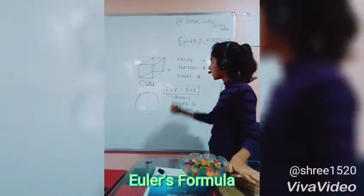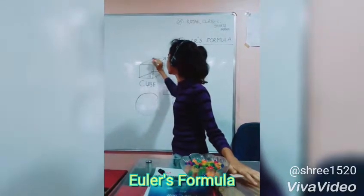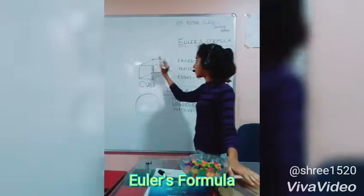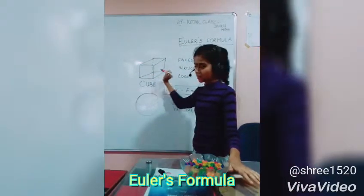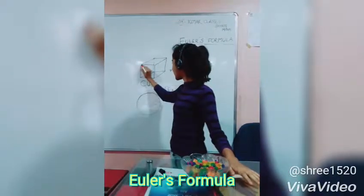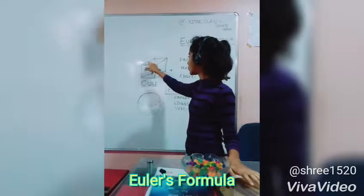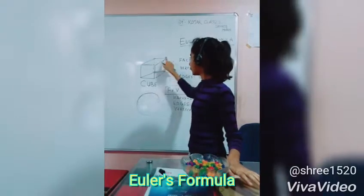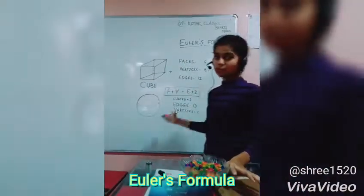Now we come to vertices. Vertices are basically the corners. When we count them, there are 8 vertices: 1, 2, 3, 4, 5, 6, 7, and 8. Now for edges — edges are the line segments joining 2 vertices. There are 1, 2, 3, 4, 5, 6, 7, 8, 9, 10, 11, and 12 — so there are 12 edges.